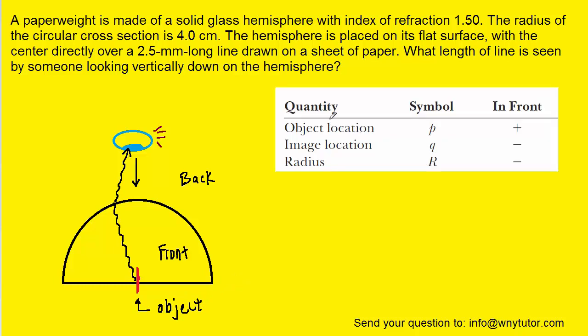And that's going to be important because it's going to dictate certain sign conventions. As just noted, when the object is located in front of the surface, then we're going to call the object distance, which is denoted as p, a positive value. The image distance will be negative, and then the radius will be negative.